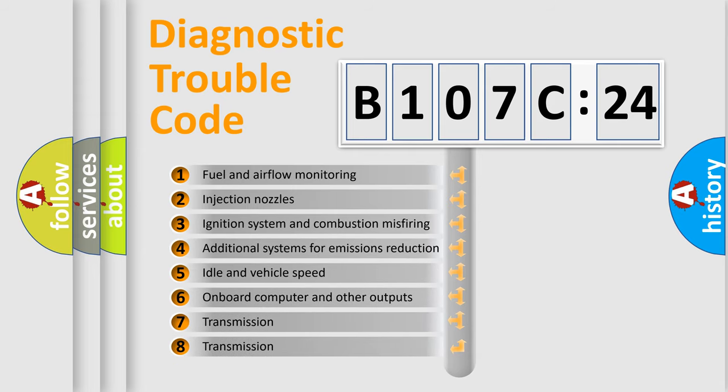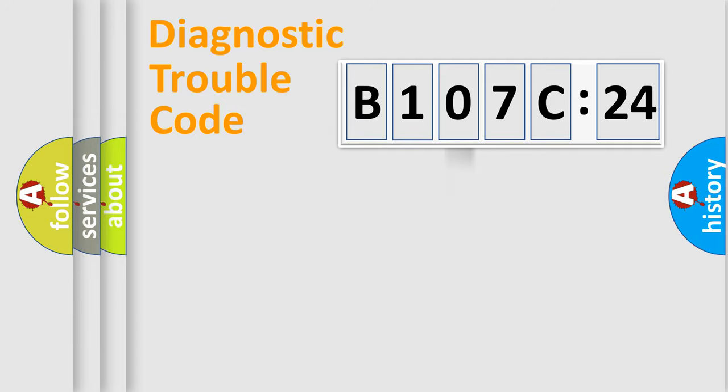The third character specifies a subset of errors. The distribution shown is valid only for the standardized DTC code. Only the last two characters define the specific fault of the group.